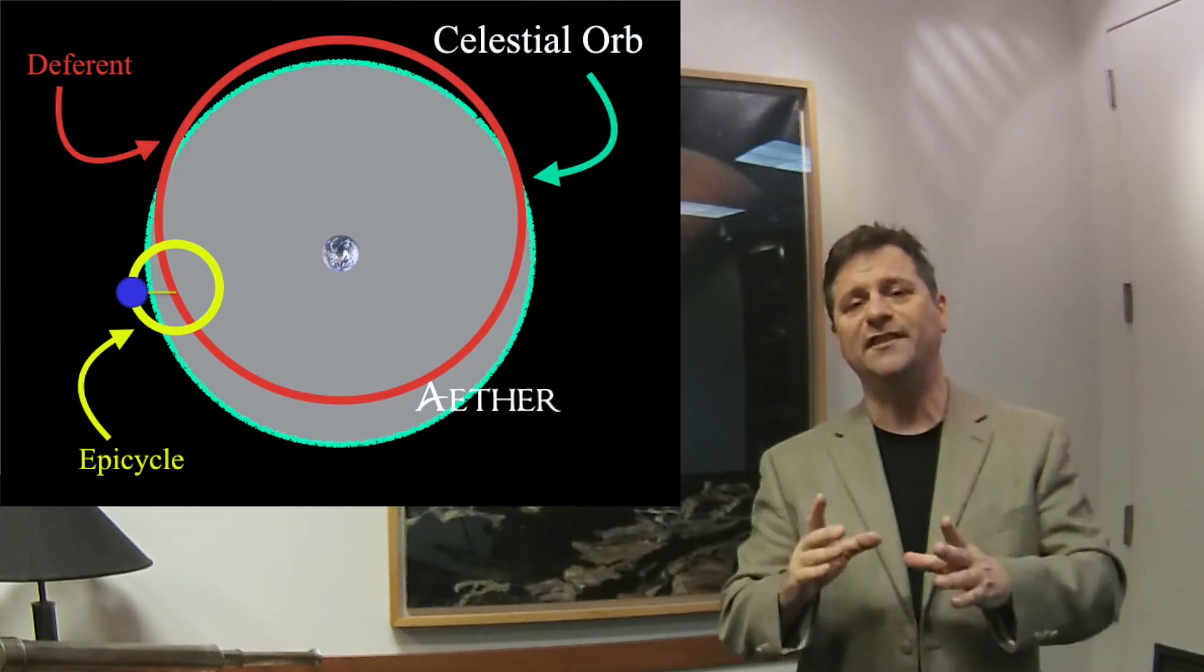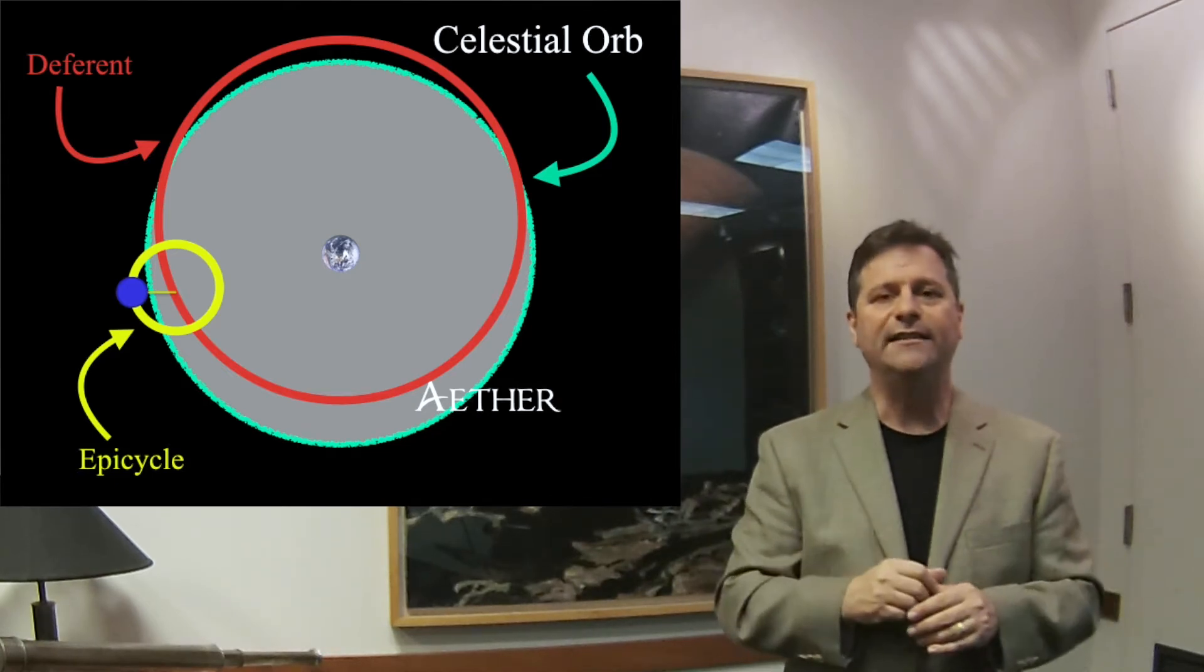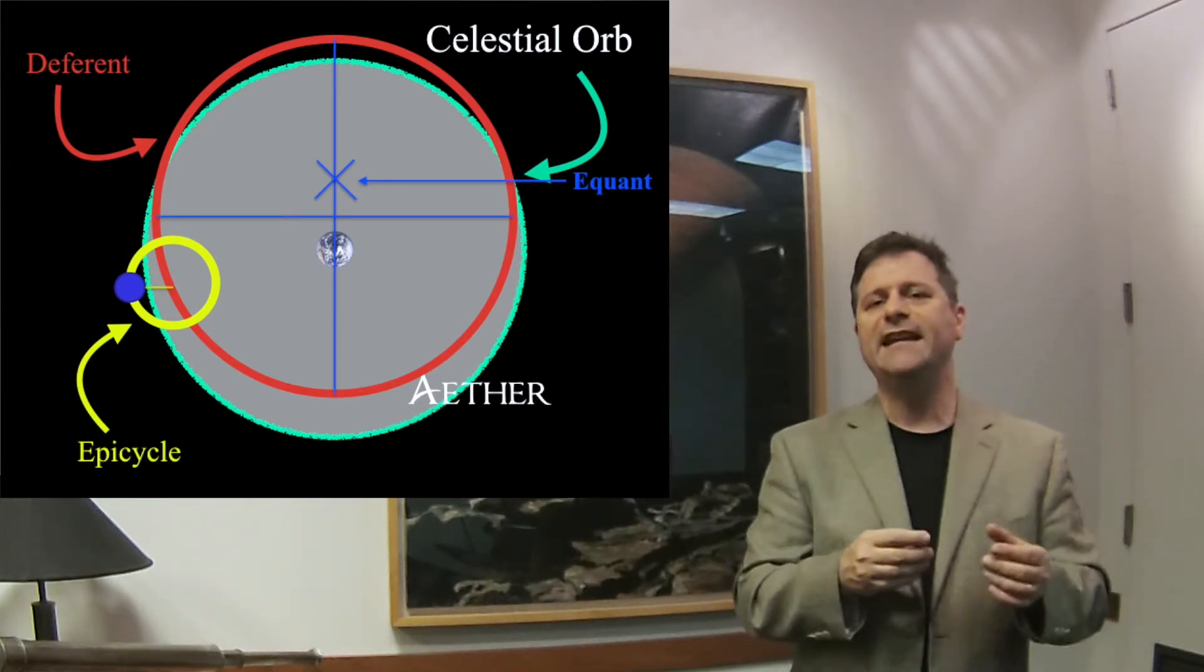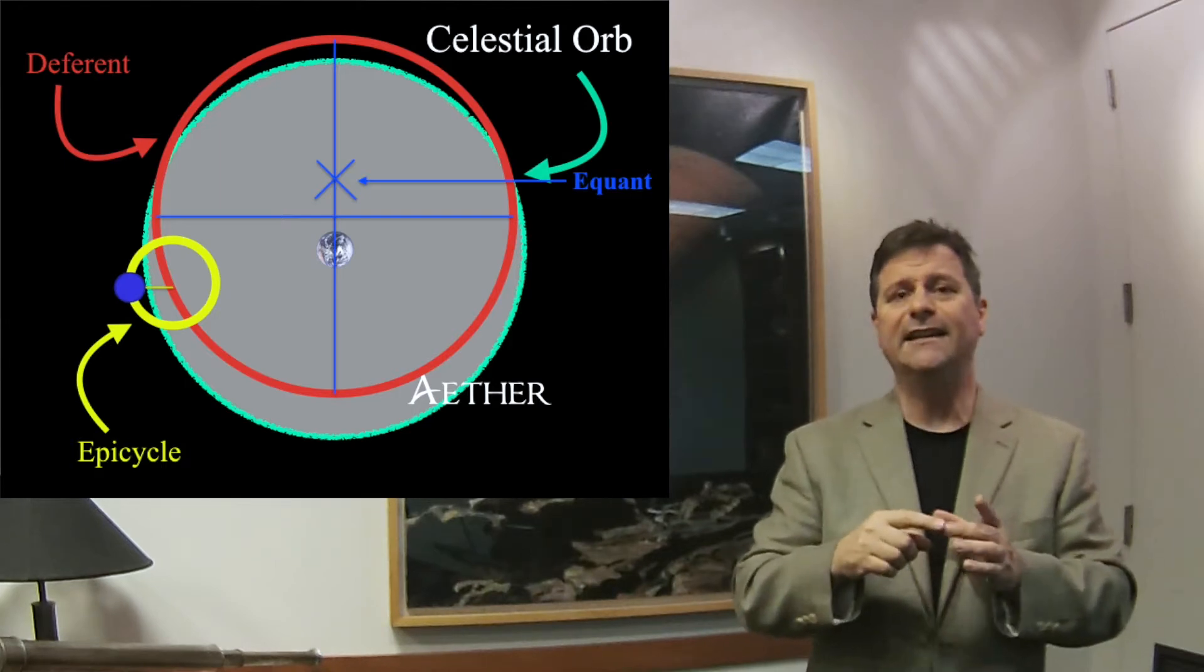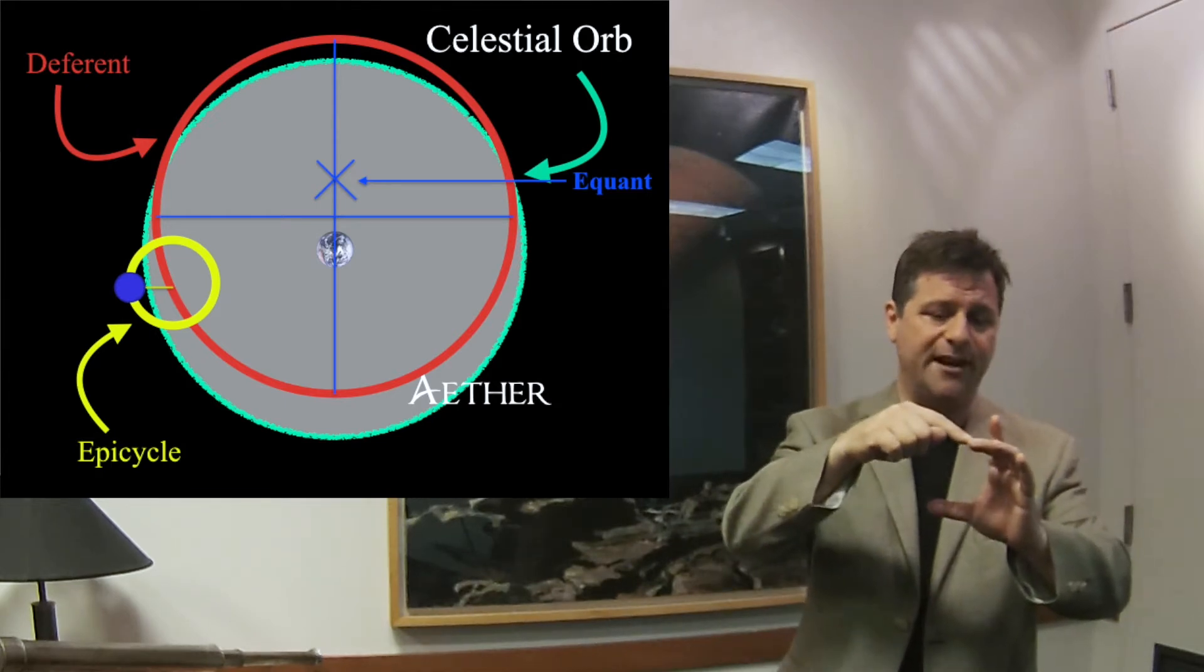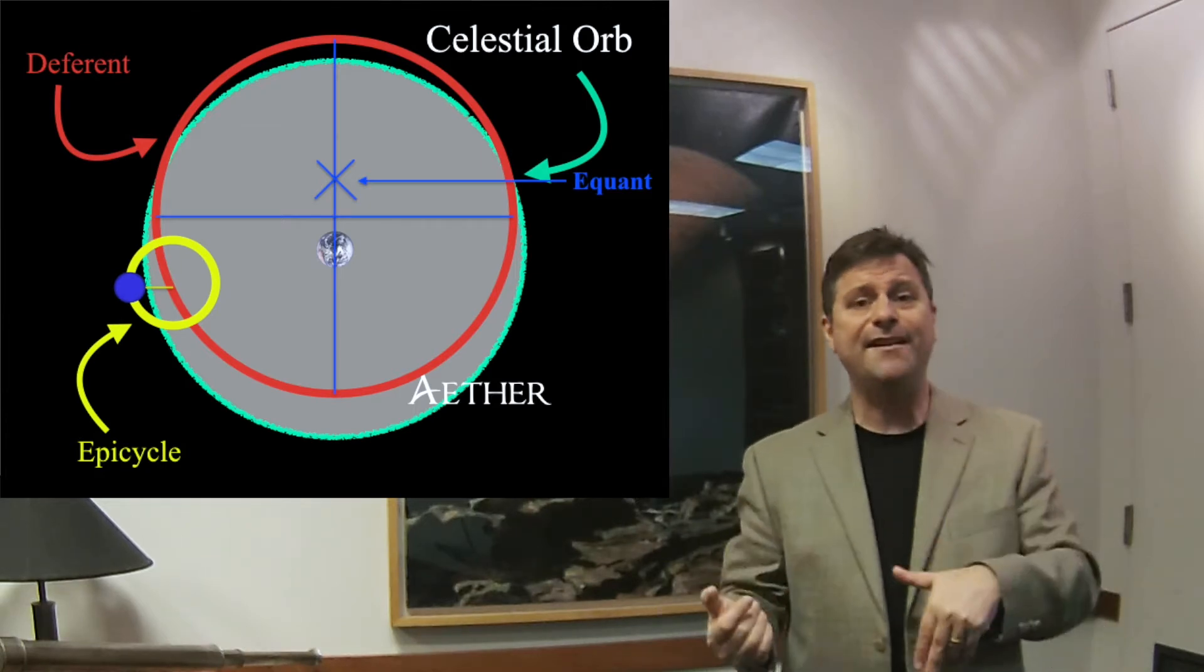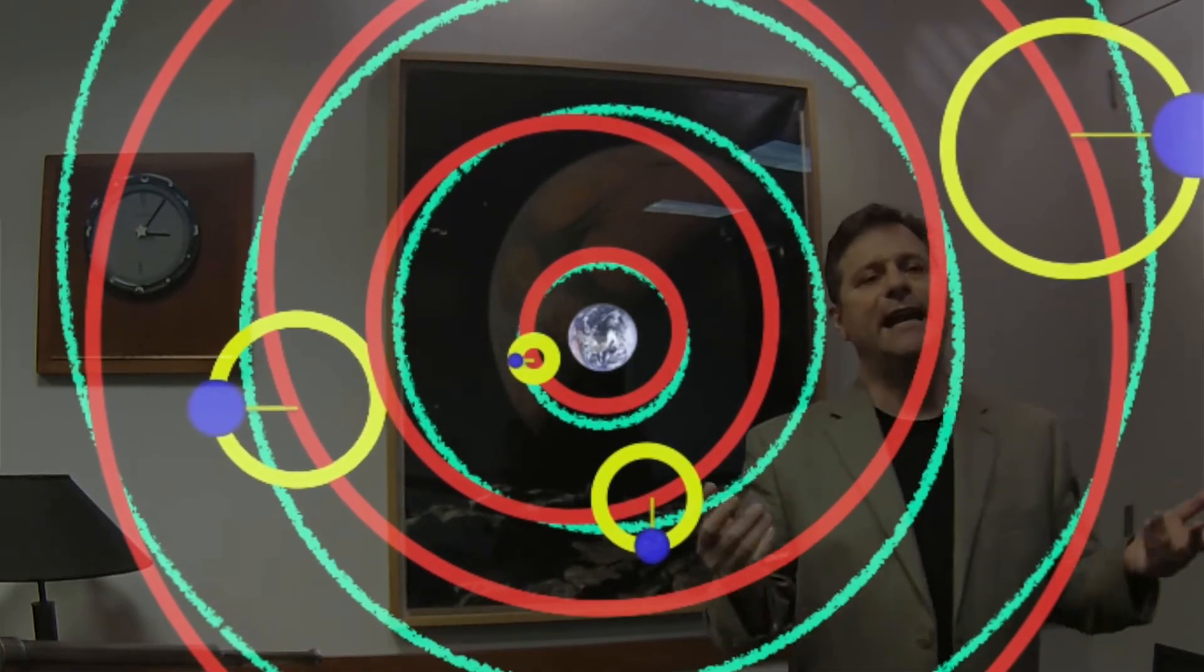Now, the planet itself doesn't actually ride on the deferent inside of the ethereal orb. But what it does is it rides on an epicycle on top that's centered on the deferent. So as the planet goes around the earth, it does these little loop-de-loops all the way around. In addition to that, the earth is not exactly at the center, but offset. And each of the planets has a different offset from center of the earth. So the earth isn't truly at the center, according to Ptolemy.